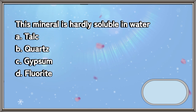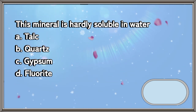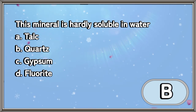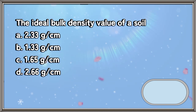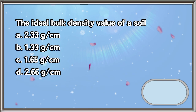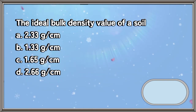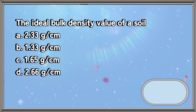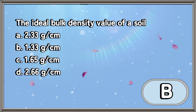This mineral is hardly soluble in water: a) talc, b) quartz, c) gypsum, d) fluorite. The answer is letter B. The ideal bulk density value of a soil: a) 2.33 g/cm³, b) 1.33 g/cm³, c) 1.65 g/cm³, d) 2.66 g/cm³. The answer is letter B.